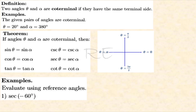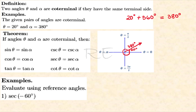Two angles theta and alpha are coterminal if they have the same terminal side. If we add 20 degrees to 360 degrees, we get 380 degrees, and those two angles have the same terminal side. The only difference is the amount of rotation or in some cases the direction of rotation. If two angles theta and alpha are coterminal, then the trig ratios are the same — sine theta equals sine alpha, and so on.